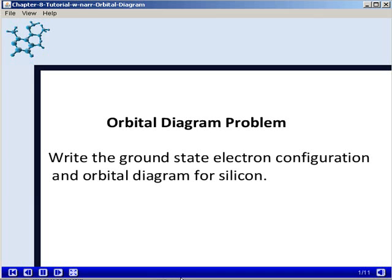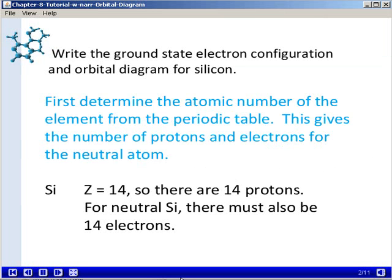In this exercise we will write the ground state electron configuration and the orbital diagram for silicon. First of all, we'll determine the atomic number of the element from the periodic table, which gives us both the number of protons and electrons for a neutral atom, because remember, protons and electrons are equal for neutral atoms.